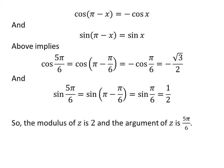So, the modulus of complex number minus square root of 3 plus i is 2 and the argument of the complex number minus square root of 3 plus i is 5 times pi upon 6.